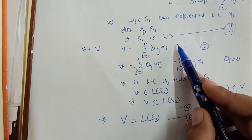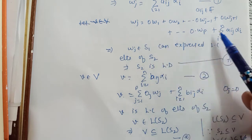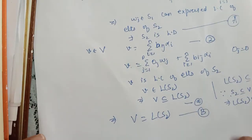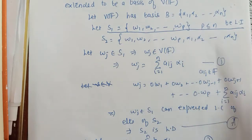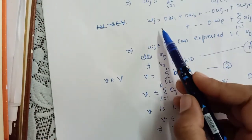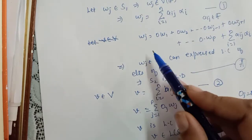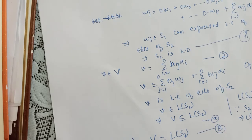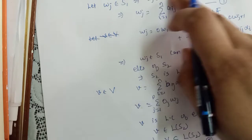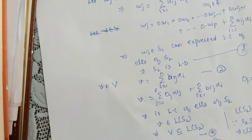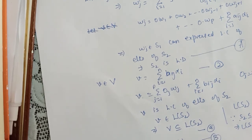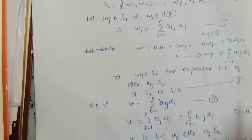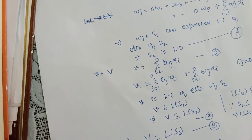So we have concluded: S₂ is linearly dependent (one of the wⱼ's can be written as a linear combination of remaining elements) and V = span(S₂). But since S₁ is already assumed to be linearly independent, the dependent element cannot be one of the wᵢ's — it must be one of the αᵢ's. Let that element be αₖ, written as a linear combination of remaining elements of S₂.